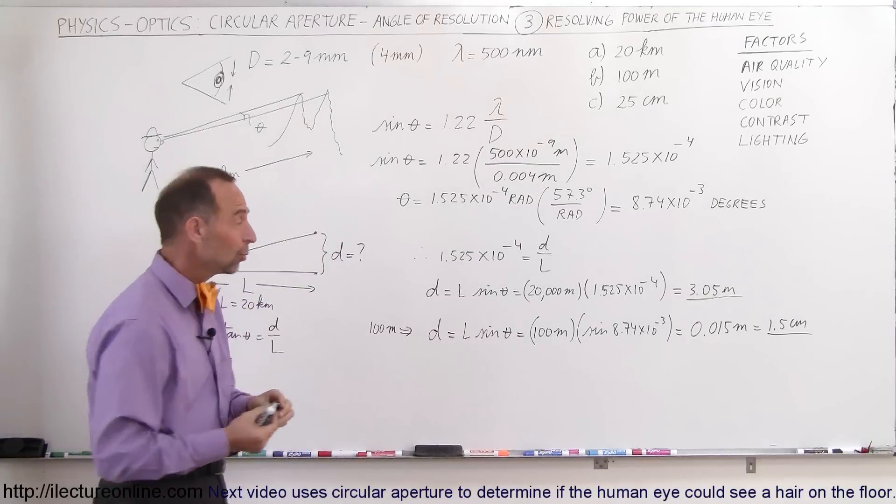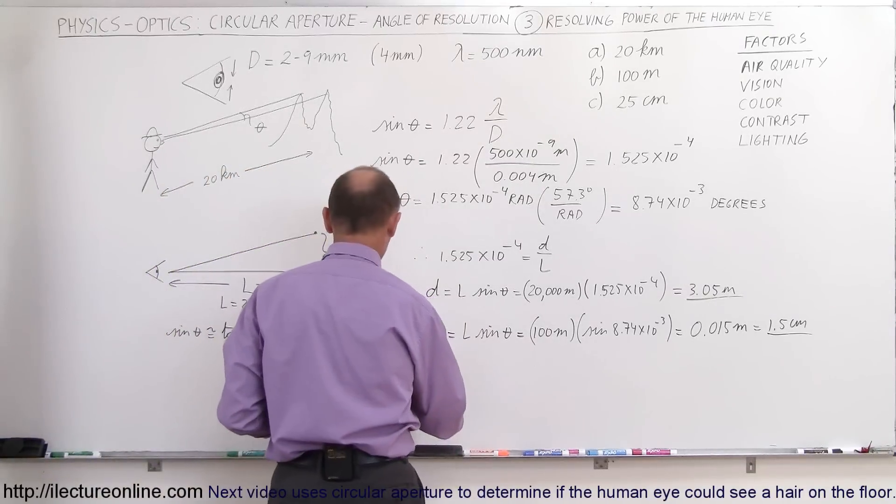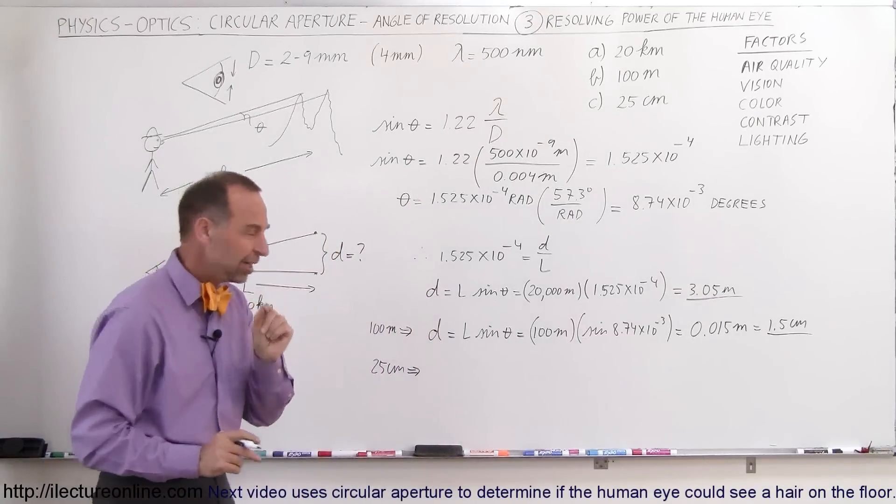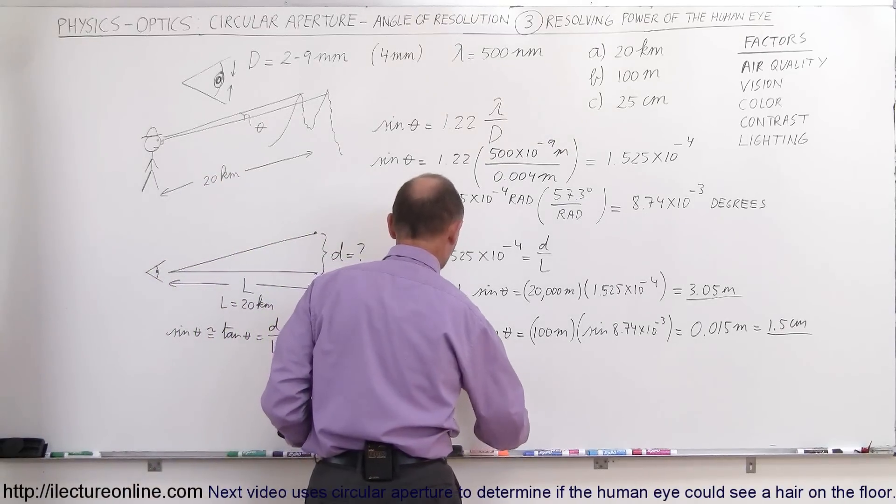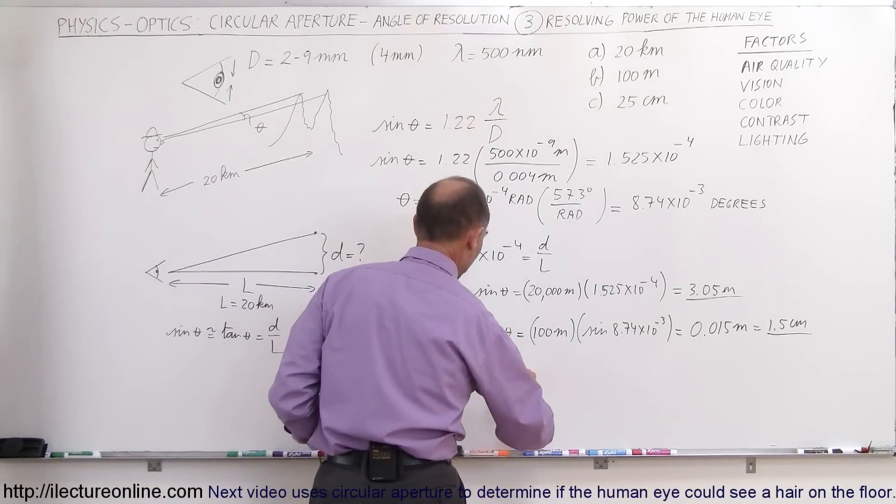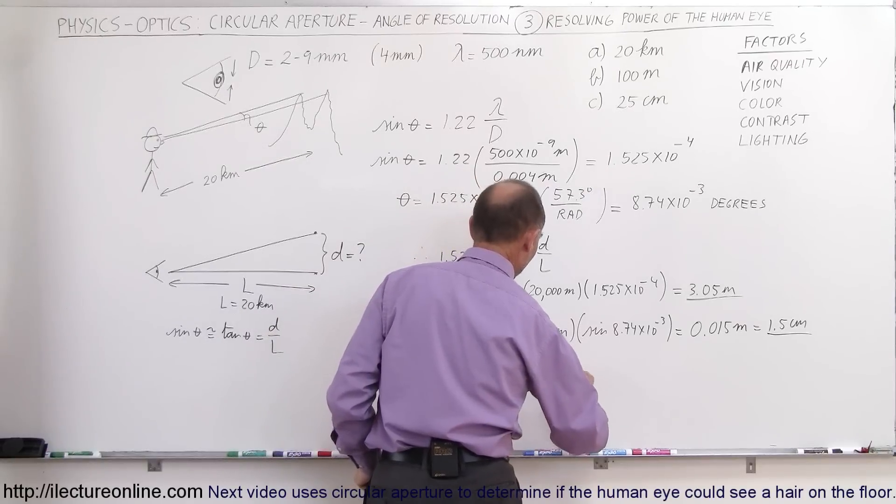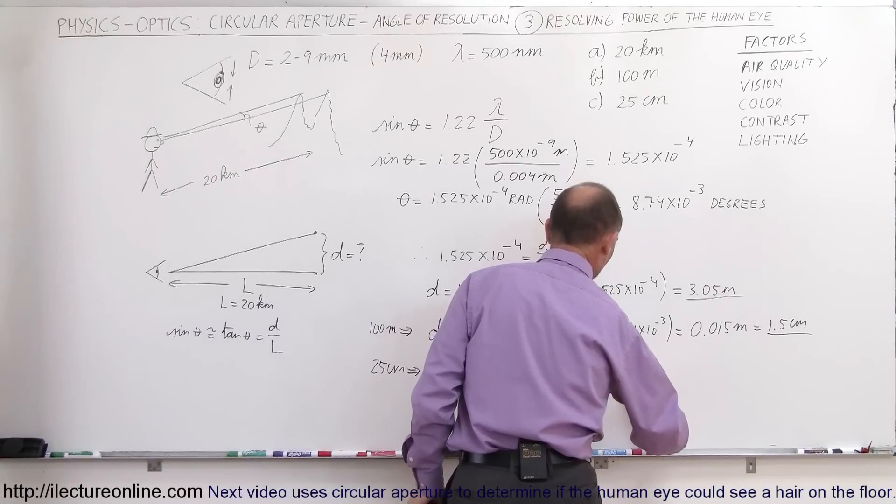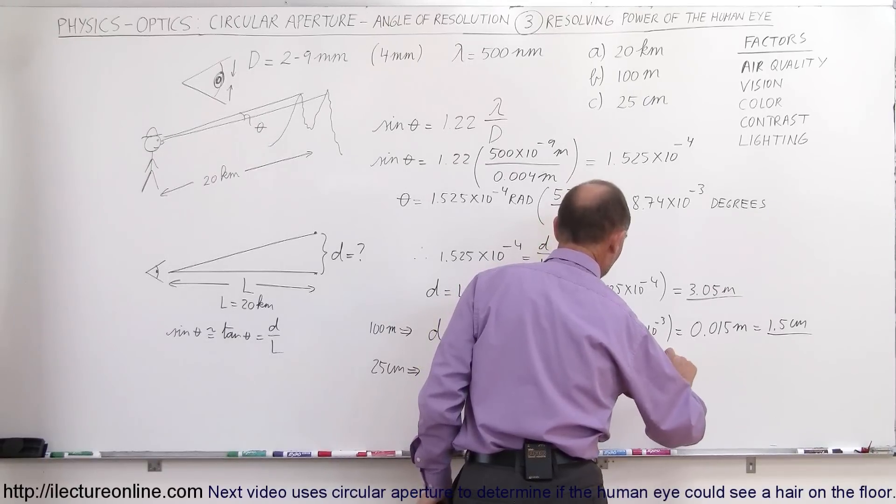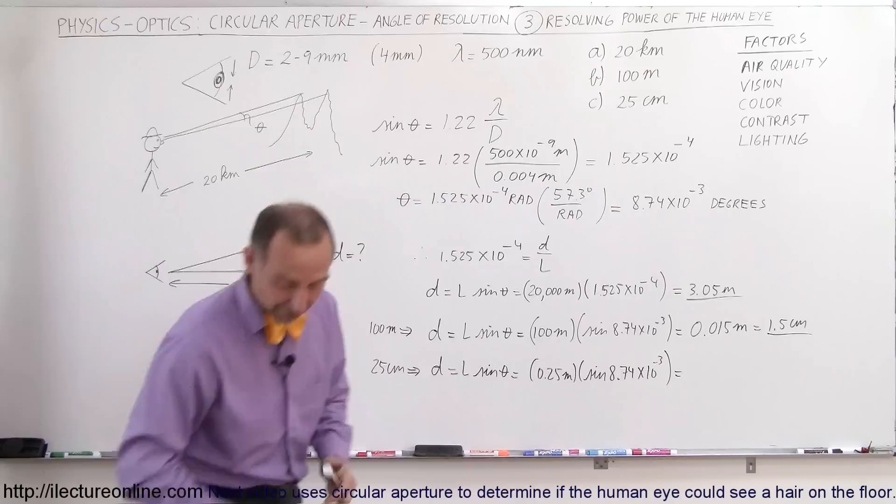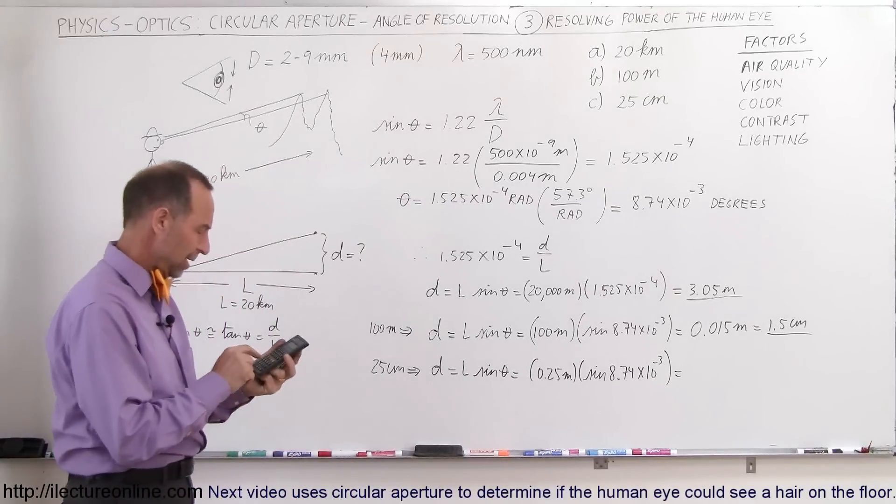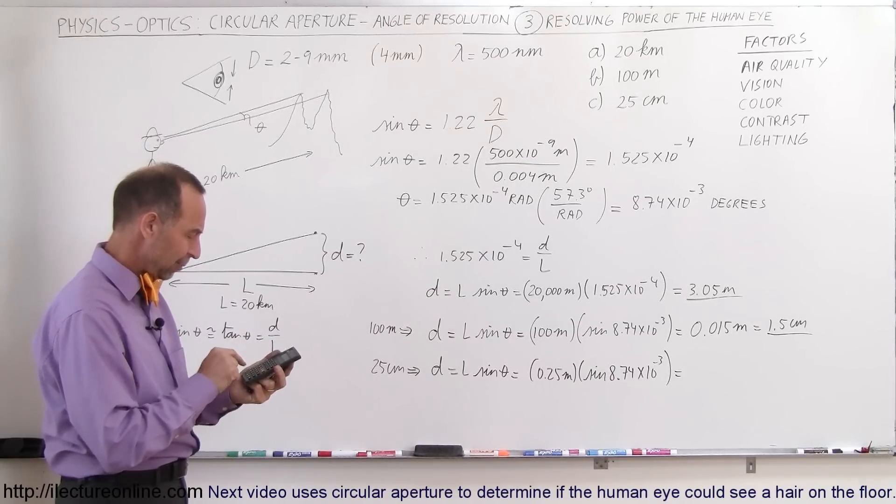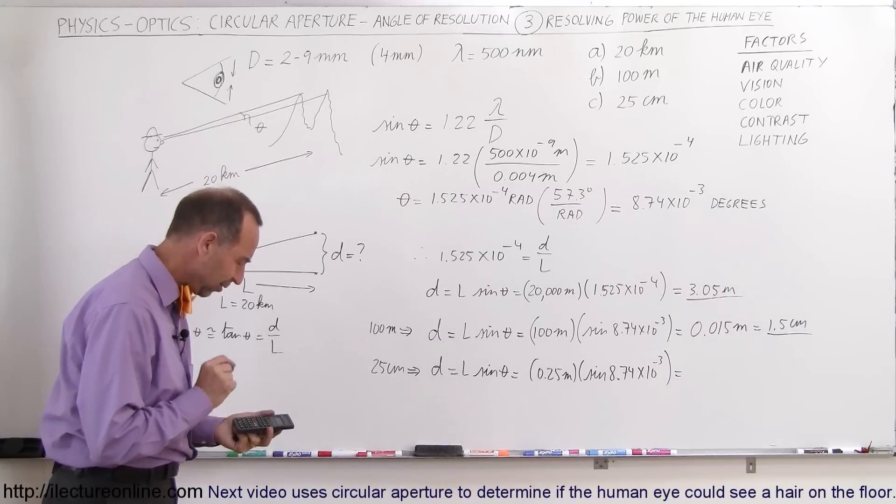And finally, a typical reading distance, what can we see? So when the distance is 25 centimeters, so we're reading a textbook, how small an object can we see with the naked eye? So this distance is equal to L times the sine of theta, which is equal to 0.25 meters, times the sine of 8.74 times 10 to the minus 3 degrees. And let's see what we get for that. So 8.74 E3 minus, take the sine of that, times 0.25 equals, and we get 0.